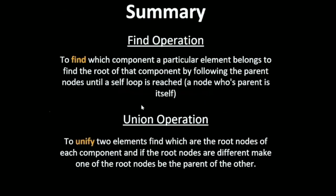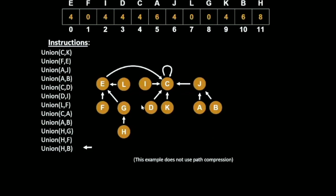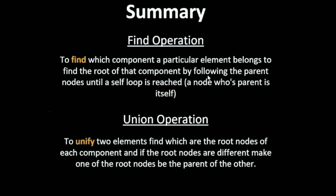The find operation finds which component a particular element belongs to, to find the root of the component by following the parent node until the self loop is reached. In this case, if you want to find the parent of H, you have to go to G, then E, and then C. From the array, you can go from H, which is 11. You have to go to 8, from 8 you have to go to 0, from 0 you have to go to 4. And at 4, you will see that you have reached a self loop. That means you have found the group of that particular element or set of that particular element. And union operation is to unify two elements, which are the root nodes of each component. And if the root nodes are different, make one of the root nodes be the parent node of the other.